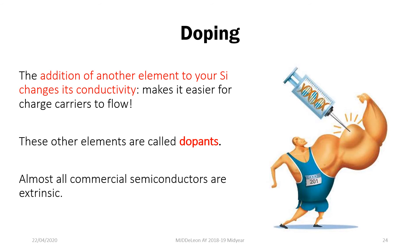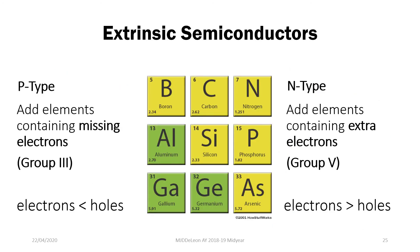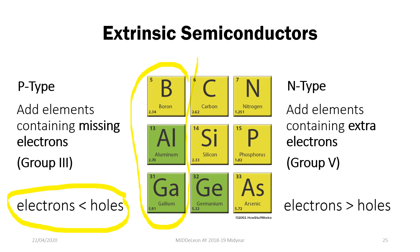Almost all commercial semiconductors used in our devices are extrinsic in nature, meaning they are doped. Extrinsic semiconductors may be classified as P-type or N-type depending on the type of dopant used. For P-type semiconductors in silicon, we usually add group 3 elements, or elements containing missing electrons, making the number of electrons less than the number of holes. For N-type semiconductors, we add elements that contain extra electrons — usually group 5 elements — which increases the population of electrons more than your holes.